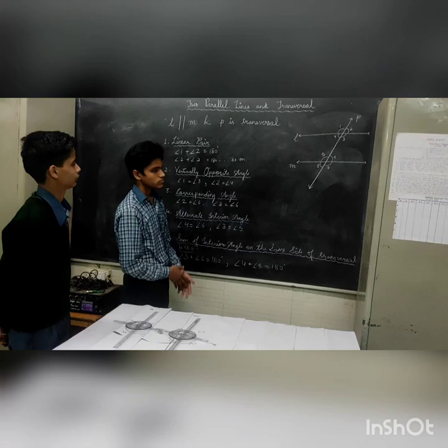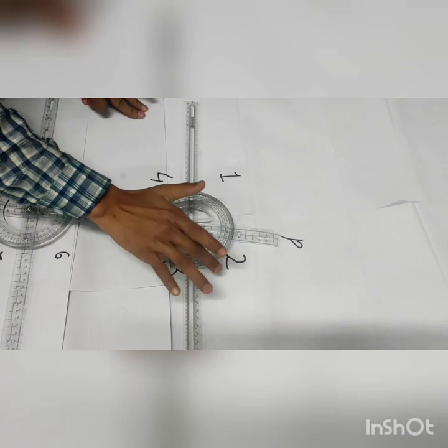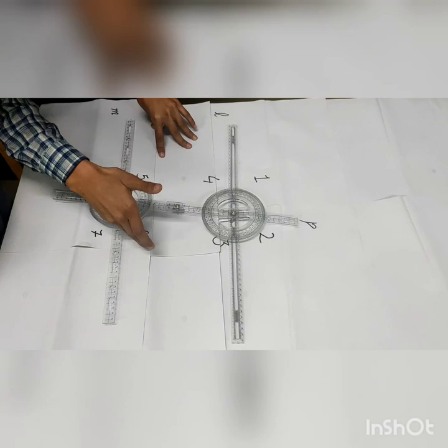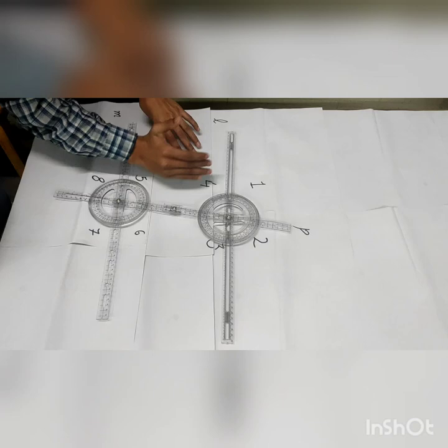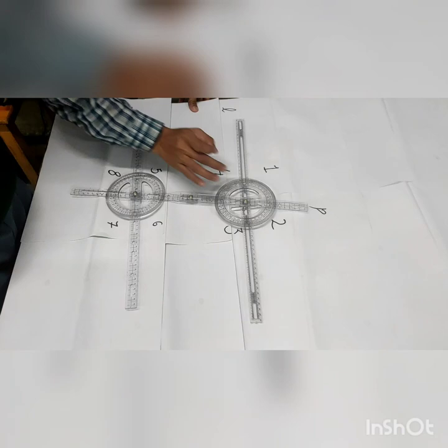Now we have another point, which is corresponding angles. We can see here that one exterior angle is angle 2 and one angle is angle 6. With transversal line P, the exterior and interior corresponding angles are equal: angle 1 equals angle 5, and angle 4 equals angle 8. This holds when lines L and M are parallel and P is the transversal line.